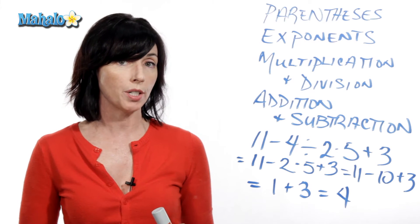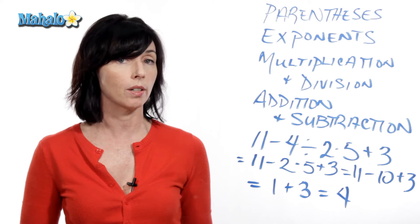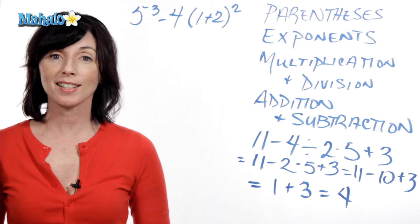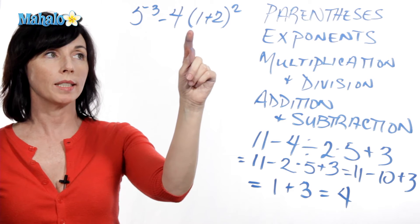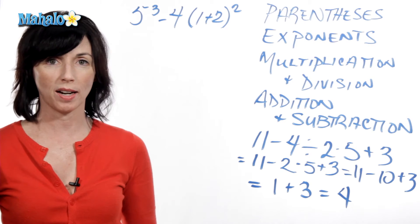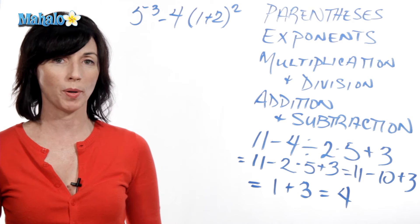If you don't use order of operations, you can very easily get a different answer and it won't be the correct one. So let's look at another example. Let's say we have 5 cubed minus 4 times 1 plus 2 and that whole thing is squared. So again, use order of operations.